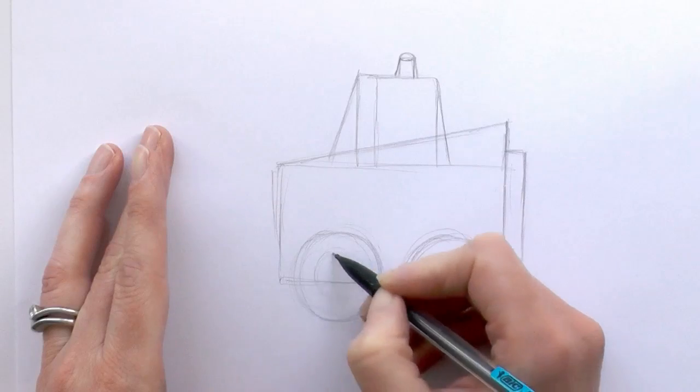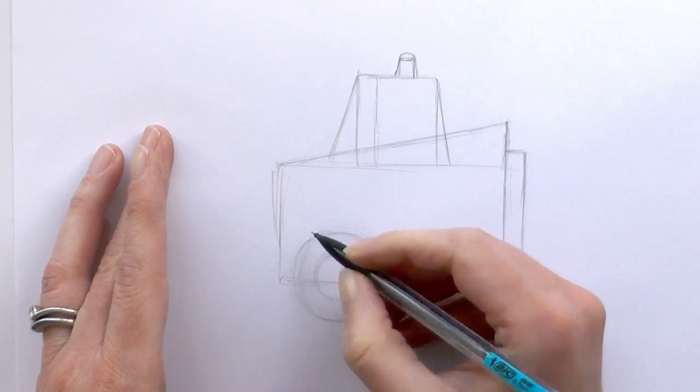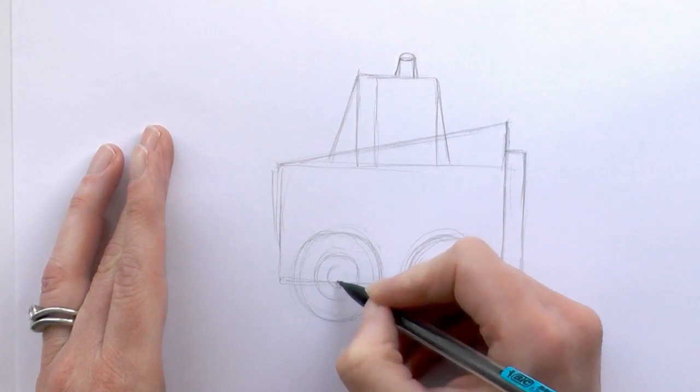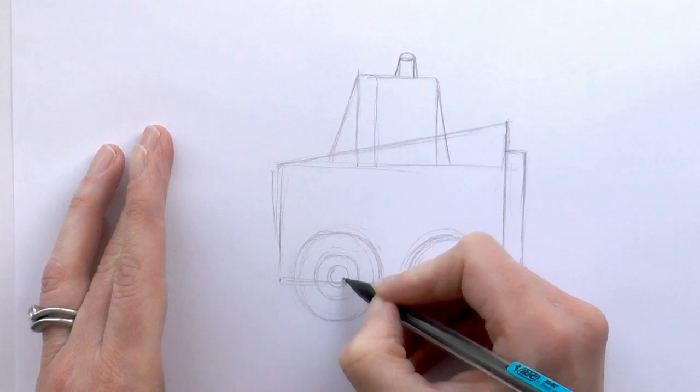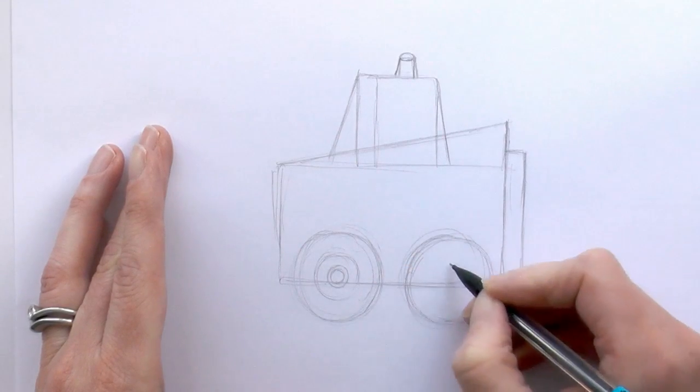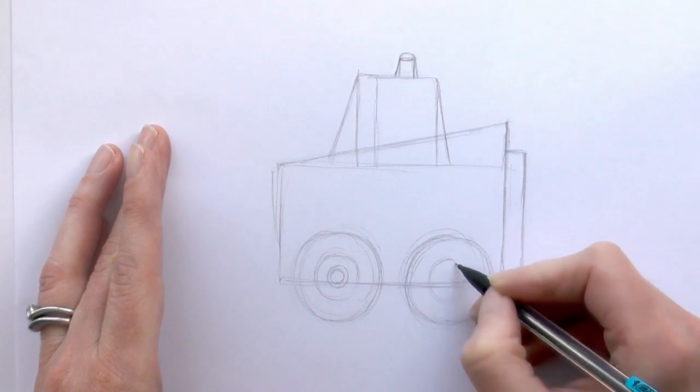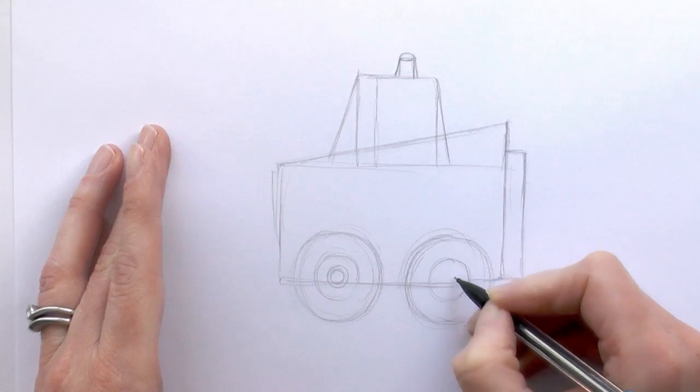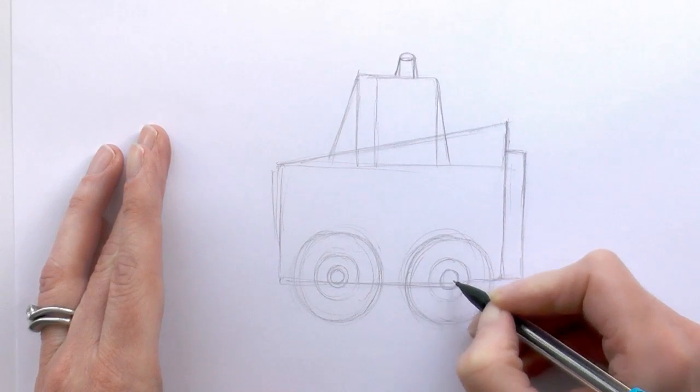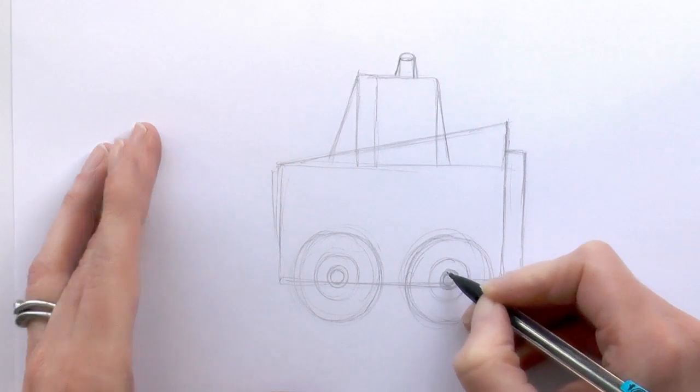And then we'll draw another circle in the middle, then another circle slightly smaller there with another one just inside that. And again for this wheel here, a circle and then a smaller circle and then a smaller one inside there.